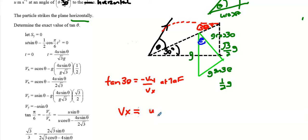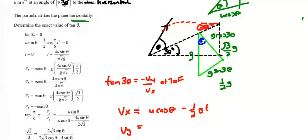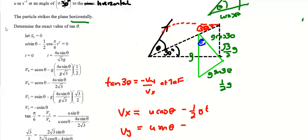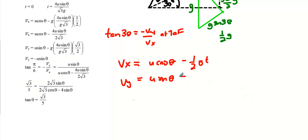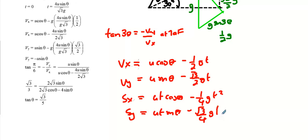φx = u cos θ − (1/2)g·t. φy = u sin θ − (√3/2)g·t. For displacement: sx = u·t cos θ − (1/4)g·t², and sy = u·t sin θ − (√3/4)g·t². That's half of (√3/2), giving us (√3/4).